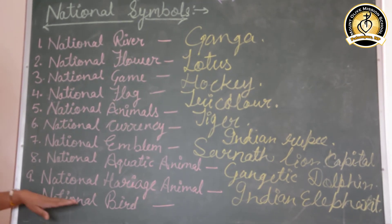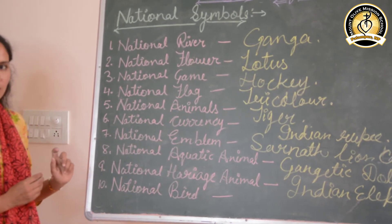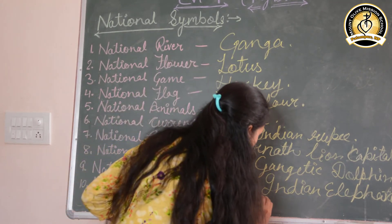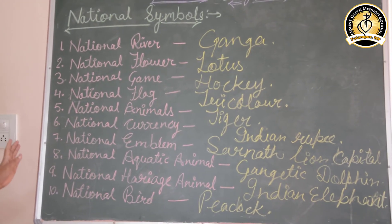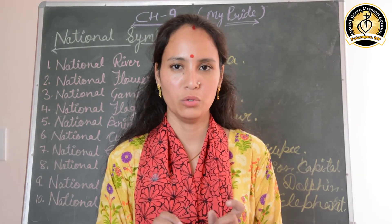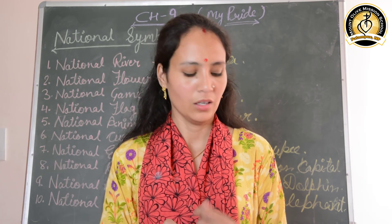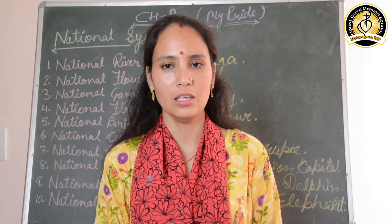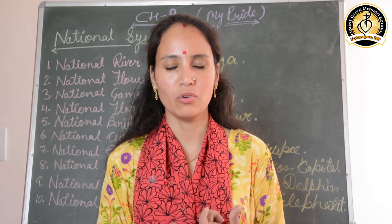And the last one is the national bird. Try to give the answer. Very good — Peacock is our national bird. These are some of our national symbols. Now, do you know what our national song is? What is our national song?